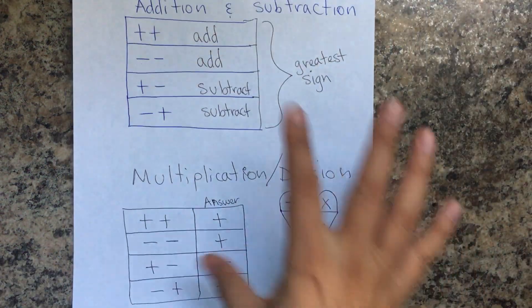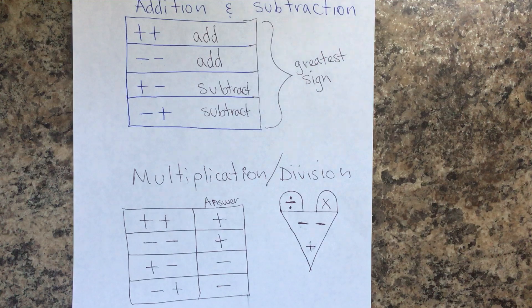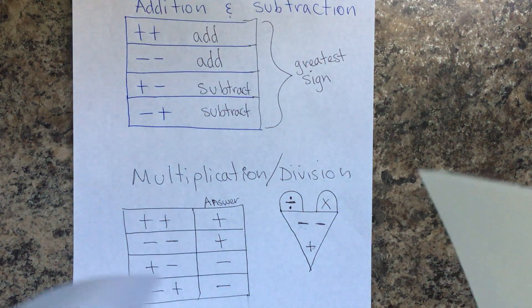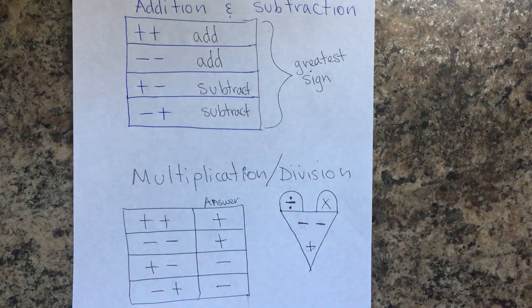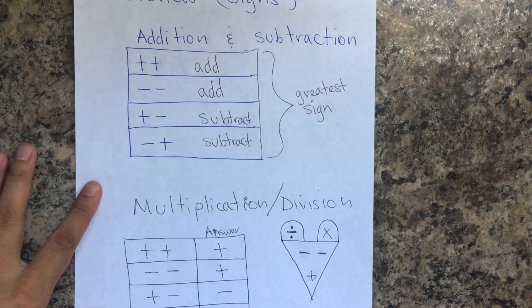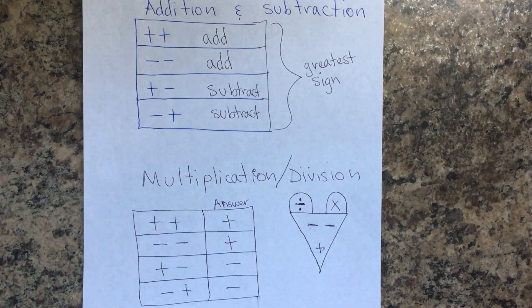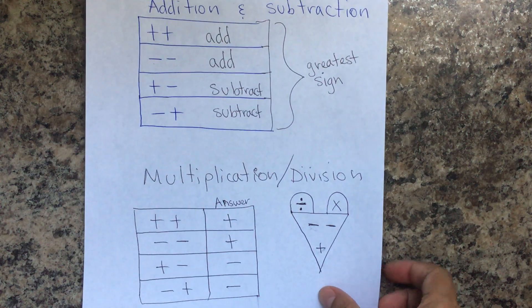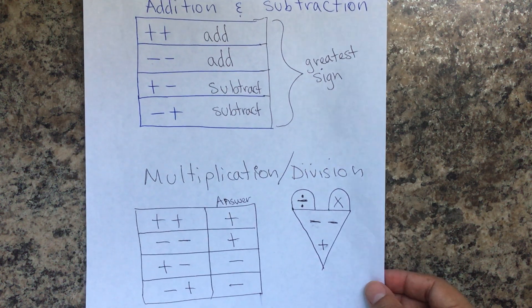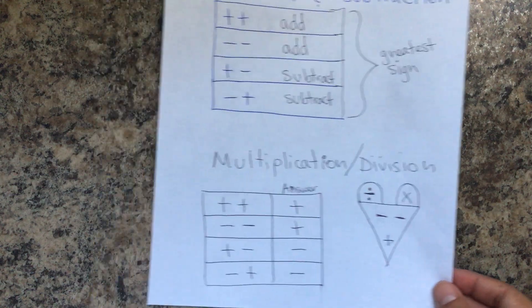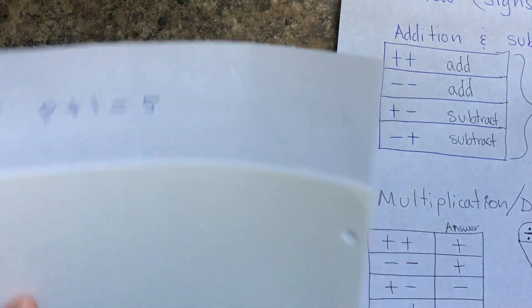So I recommend that you have this in a small flashcard until you really remember them. Because if you don't know your signs, then you're going to have a lot of trouble throughout algebra and geometry and algebra 2. Or now math 1, math 2, and math 3. So have these handy because you're going to need it.